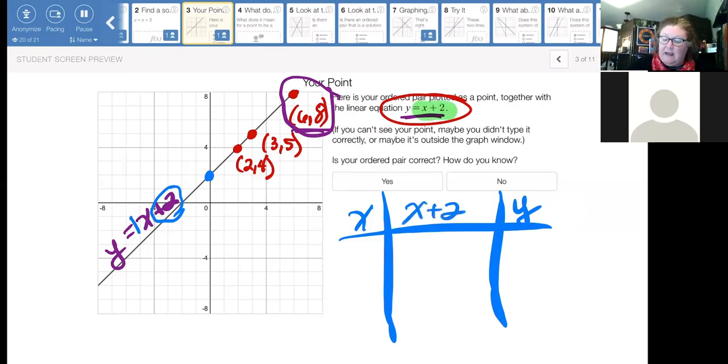So let me take Alex Z's. His input is six. Six plus two. My output is eight. There's my x, there's my y, so it works.